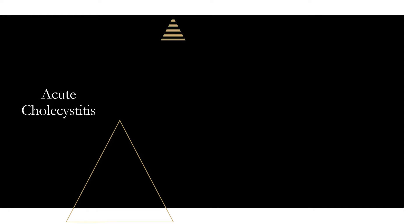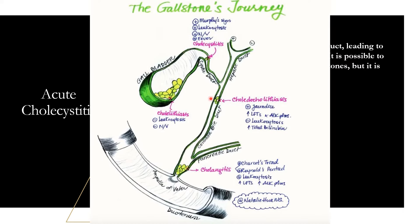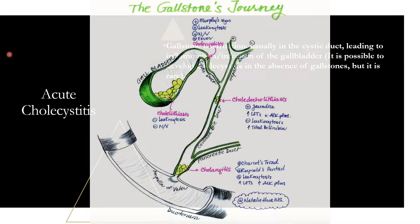Moving on to acute cholecystitis. This is when we have gallstone obstruction — about 90% of the time a gallstone obstructs the cystic duct, leading to inflammation and infection of the gallbladder. Looking at the diagram, the stone is now blocking the cystic duct, so bile can't come out of the gallbladder, leading to inflammation and infection. You can see the difference: in cholelithiasis the stone is just sitting in the gallbladder, but in cholecystitis the stone is lodged in the cystic duct, causing more problems.